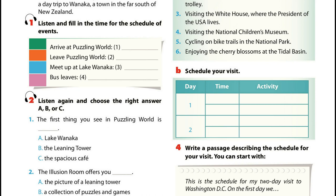At 12:30 we leave for Lake Wanaka, New Zealand's fourth largest lake. This natural paradise has something for everyone. Adventure lovers may follow the biking and walking tracks through the park. Relaxation seekers may stay by the lake, taking a boat ride or just sitting and watching its changing beauty. We meet up at 4 o'clock, and the bus leaves at exactly 4:15.